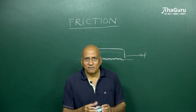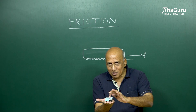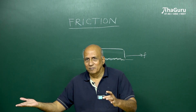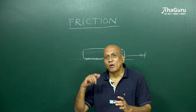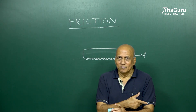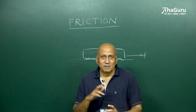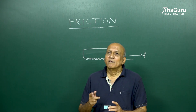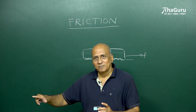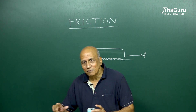That is, if I come back to this example, relative to the box, my hand is trying to move to the right. So the frictional force on my hand is to the left. If the friction on my hand is to the left, by Newton's third law, friction on the box is to the right. And friction is what caused it to accelerate.